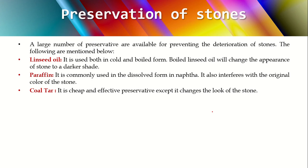The next preservative is coal tar. It is applied on the stone surface and is a good preservative. It is very cheap and easily available. The main disadvantage is that it produces an objectionable appearance — once you coat the stone surface with coal tar, it will change the look of the stone. If your stone is very glossy or shiny, applying coal tar will make it a little bit dull.